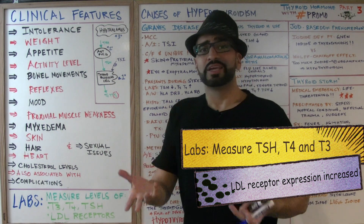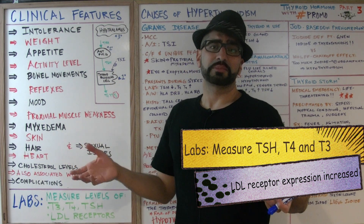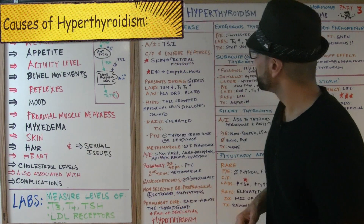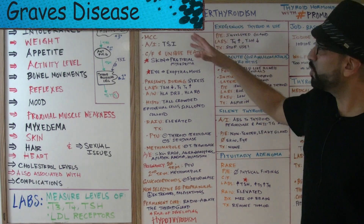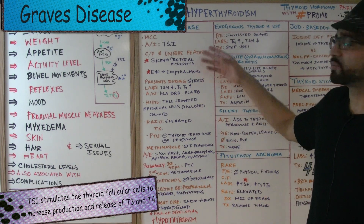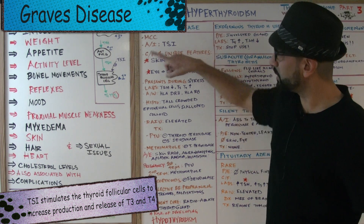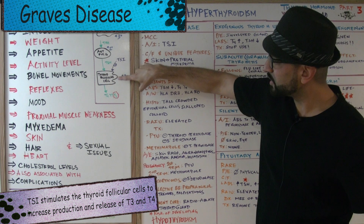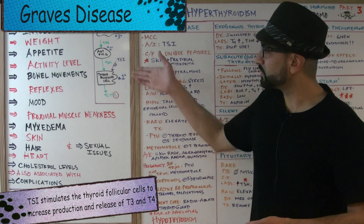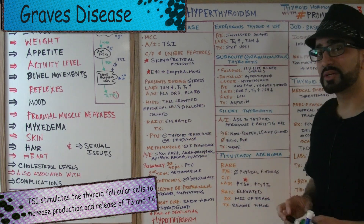LDL receptor expression levels will be high when cholesterol is low. Now, the most common cause of hyperthyroidism is Graves' disease — an autoimmune disease where thyroid stimulating immunoglobulins (TSI) directly stimulate the TSH receptors on thyroid follicular cells, causing release of T4 and T3, leading to the hyperthyroid state.